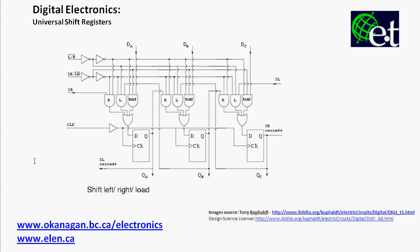You can't obviously do all those things at the same time, but what you can do is with some control signals, you can determine whether you're going to shift right, shift left, or load, and then you can take that data and output it all at the same time.